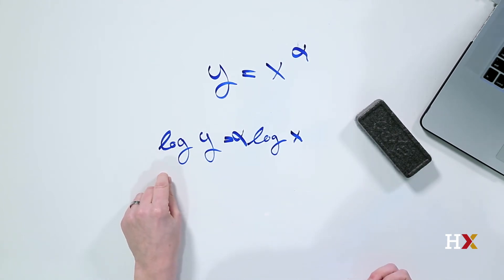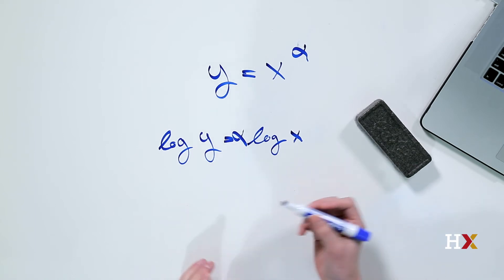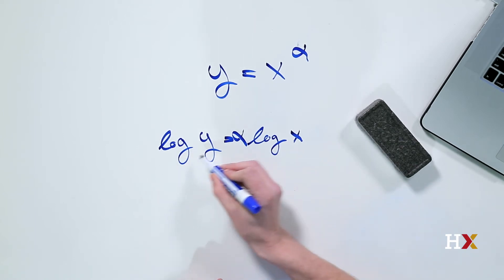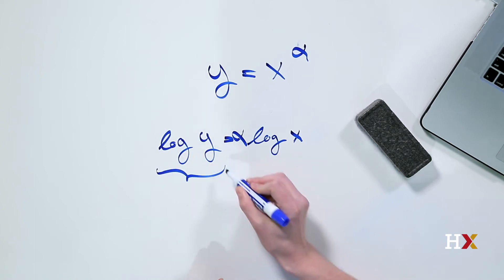In this case, what we have is log y is equal to alpha times log of x. We can now think about plotting this on a different set of axes, where instead of using our original y, we have log transformed the axis. I'm going to call this y prime.